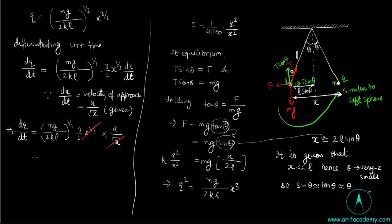This is equal to 3 by 2 A Mg by 2 L, putting the value of K as 1 by 4 pi epsilon naught.